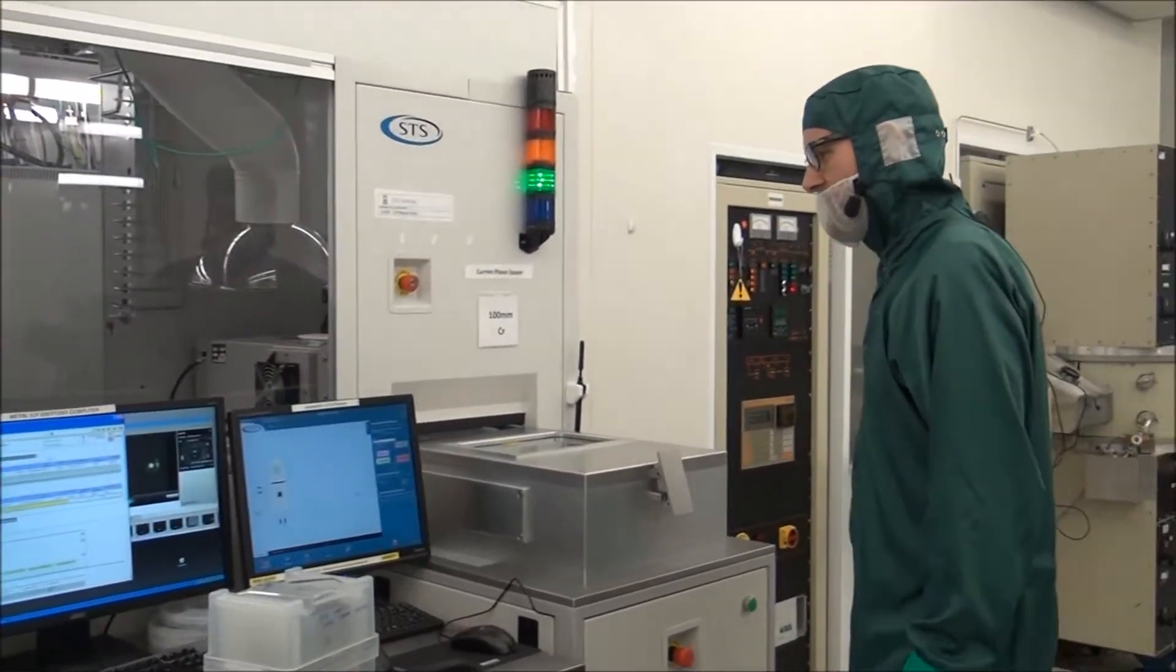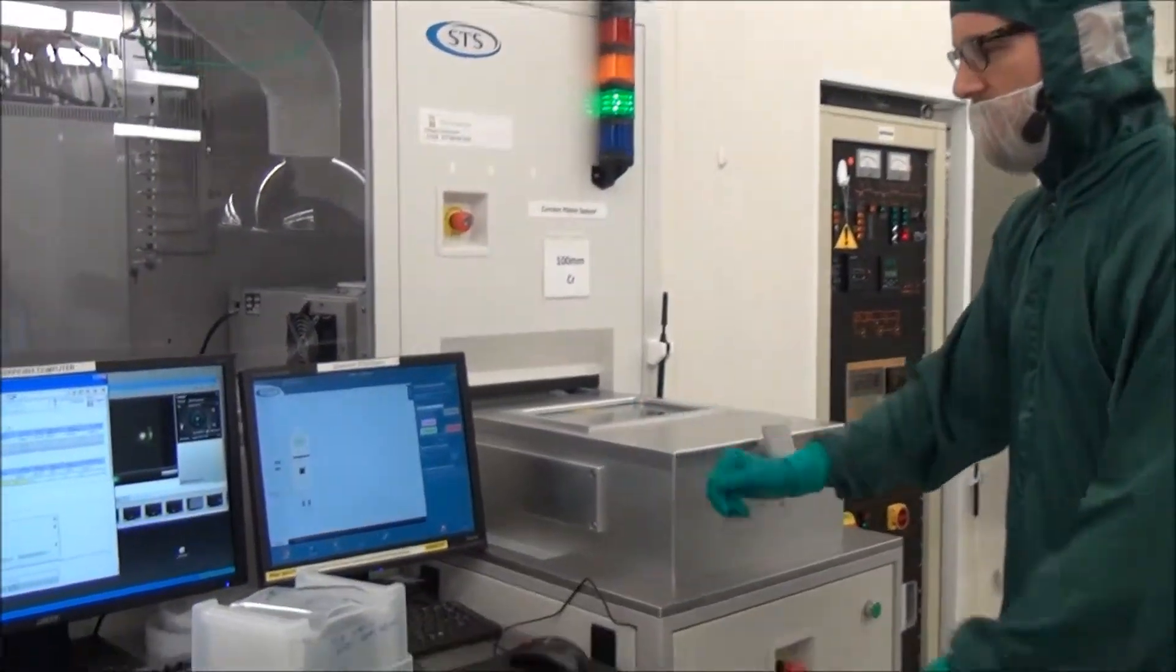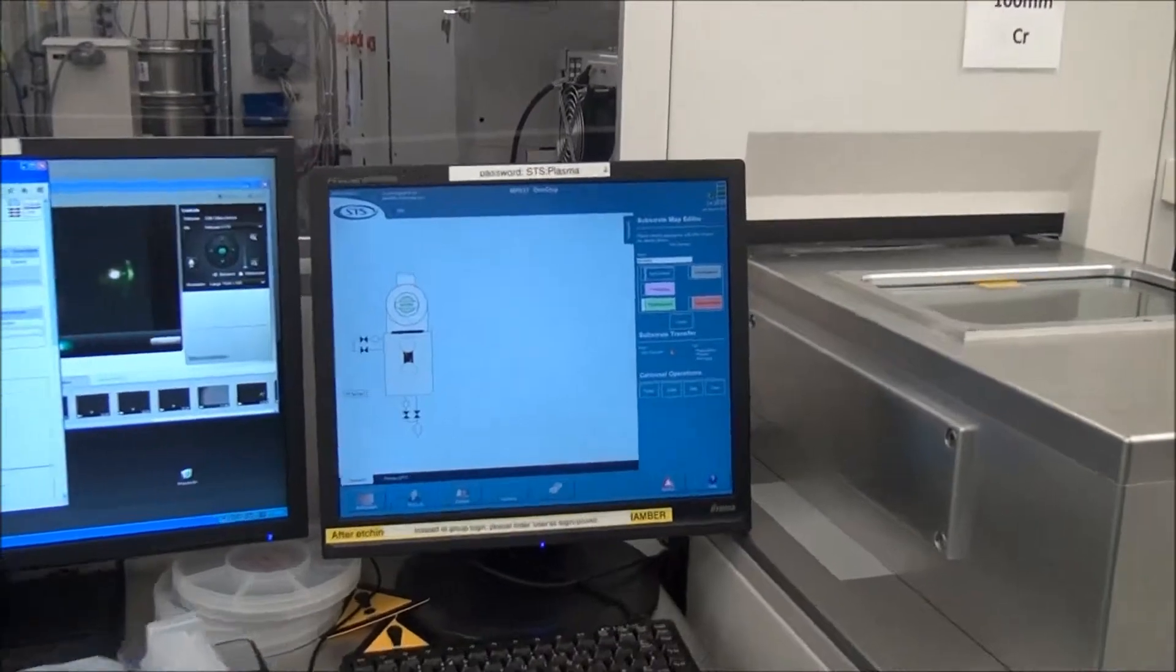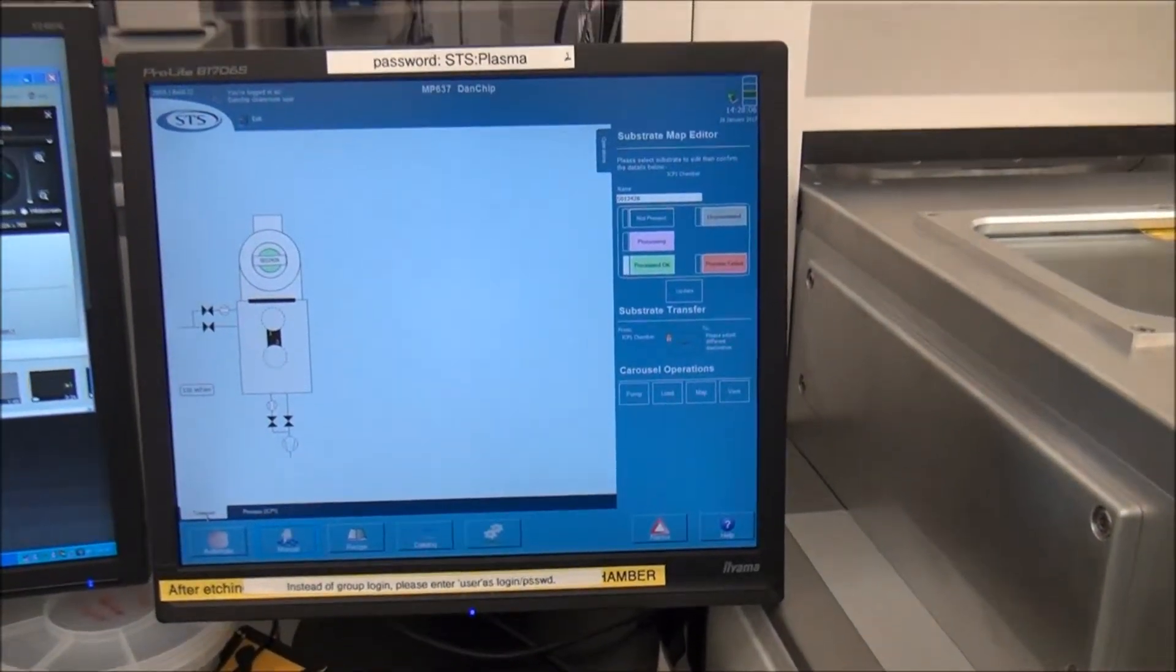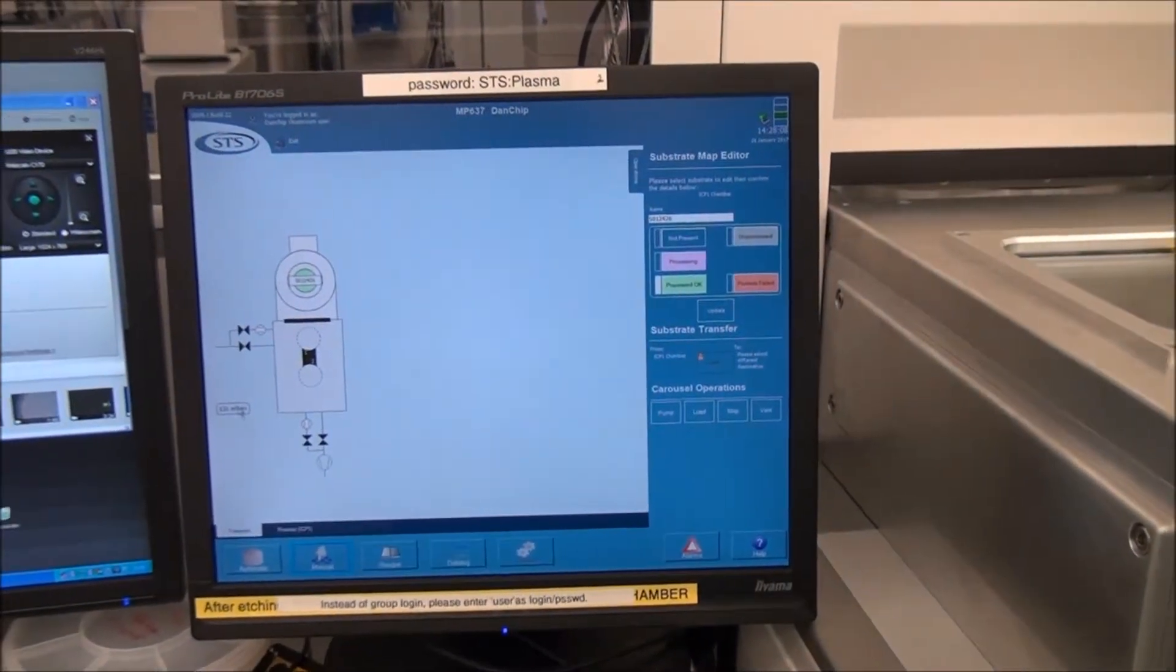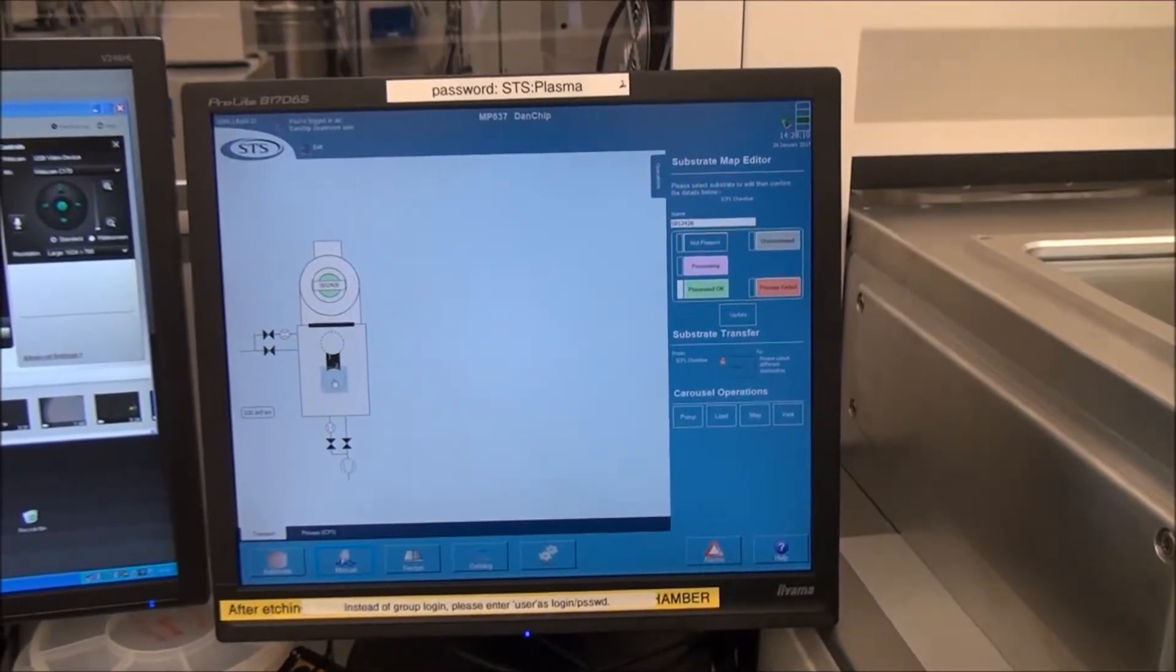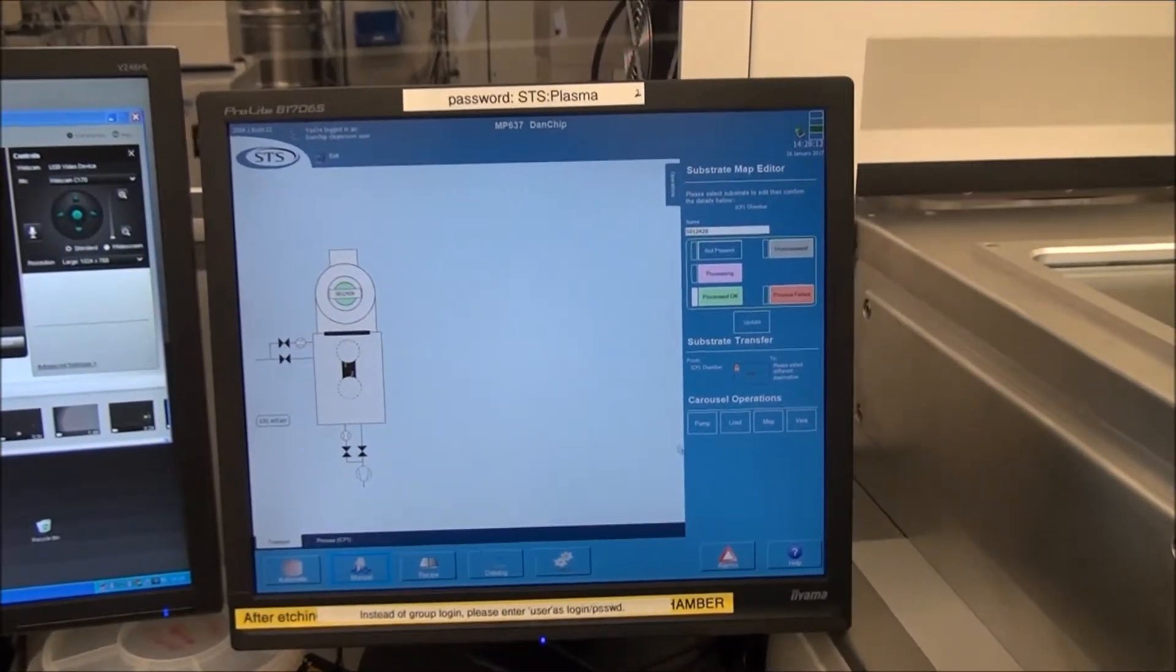To load a wafer, you go to the user software, press the manual button and the transport tab. Currently the load lock is under vacuum, so we press the load button.